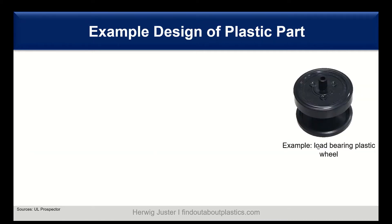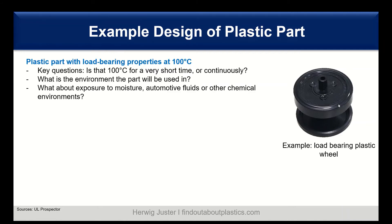Let's work through an example design of a plastic part. I have chosen a load-bearing plastic wheel which needs to be designed, with load-bearing properties at 100°C. From a design point of view, the first key question is: is that 100°C only short-term, or is it continuous? In our example it is continuously 100°C. Further questions include: what is the environment the part will be used in, and what about exposure to moisture, automotive fluids, or other chemical environments? But here we focus on the extended high heat exposure of 100°C and how to tackle this.